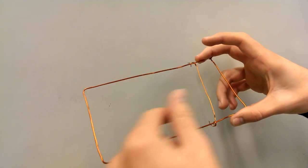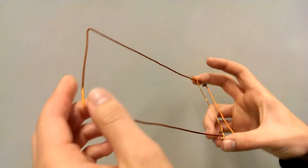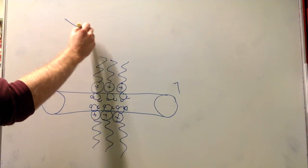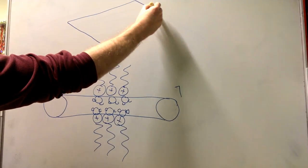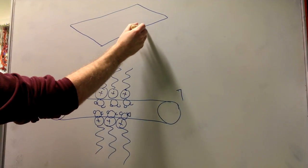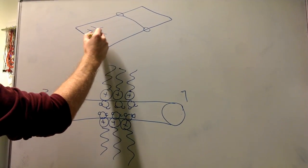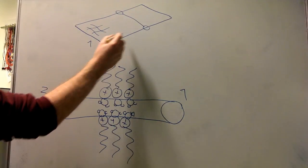Using this device we can show the energetic nature of surface tension. The rectangle made out of copper wire has a moveable bar in the center. When a soap bubble surface is formed on one side with no counteracting forces the bar will be pulled in.